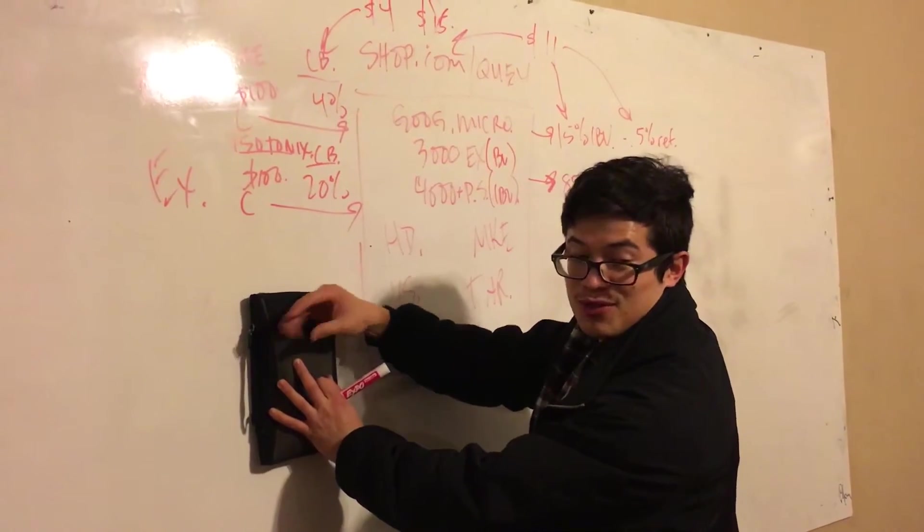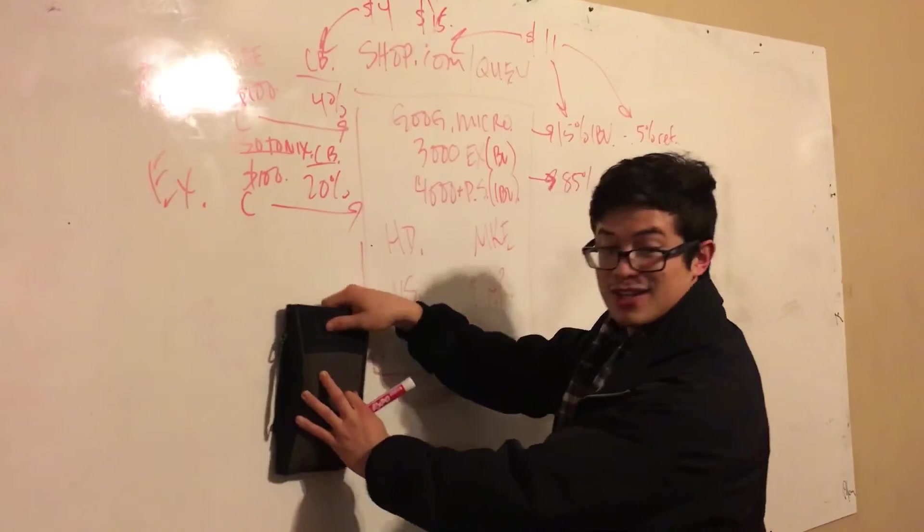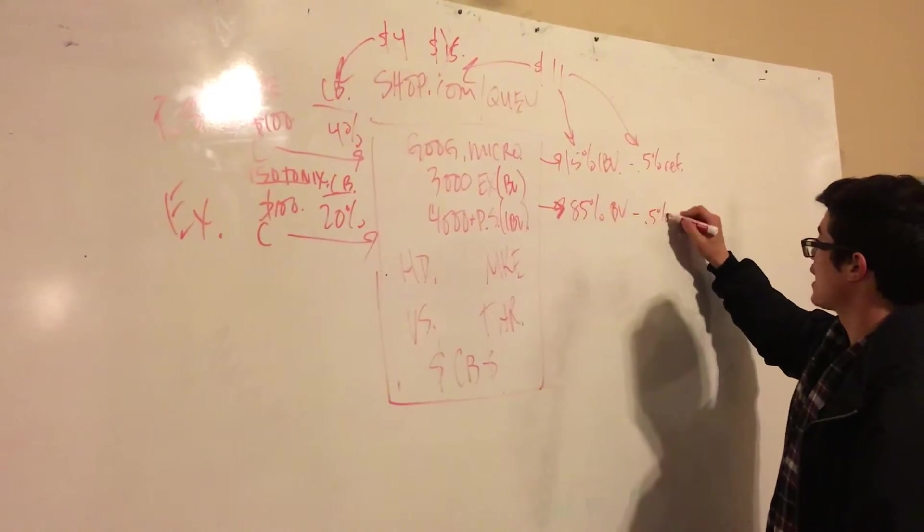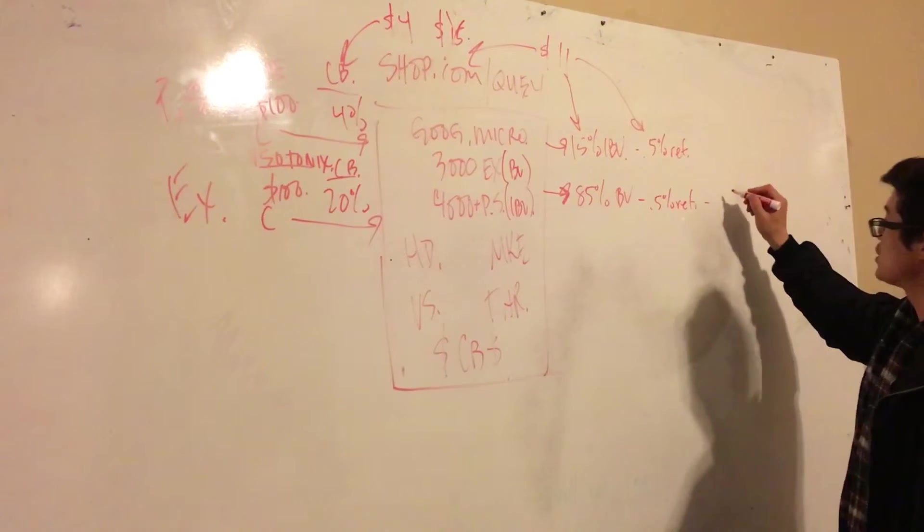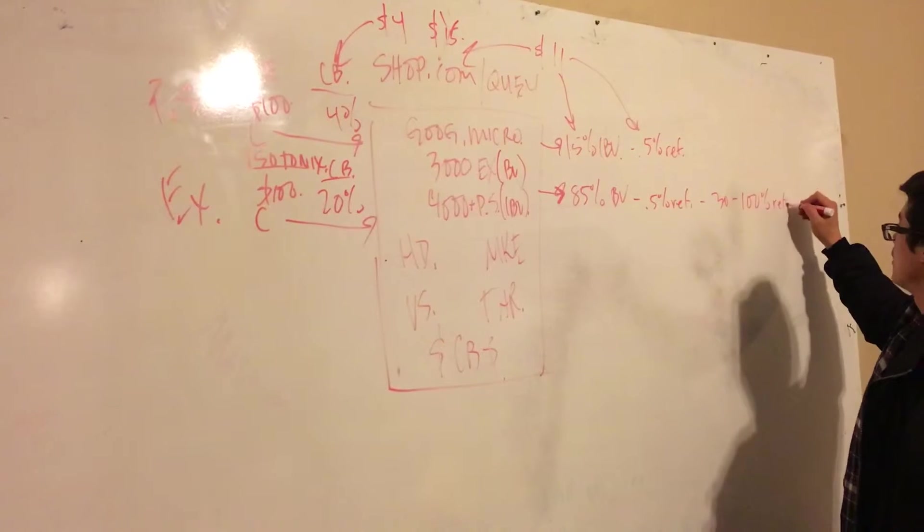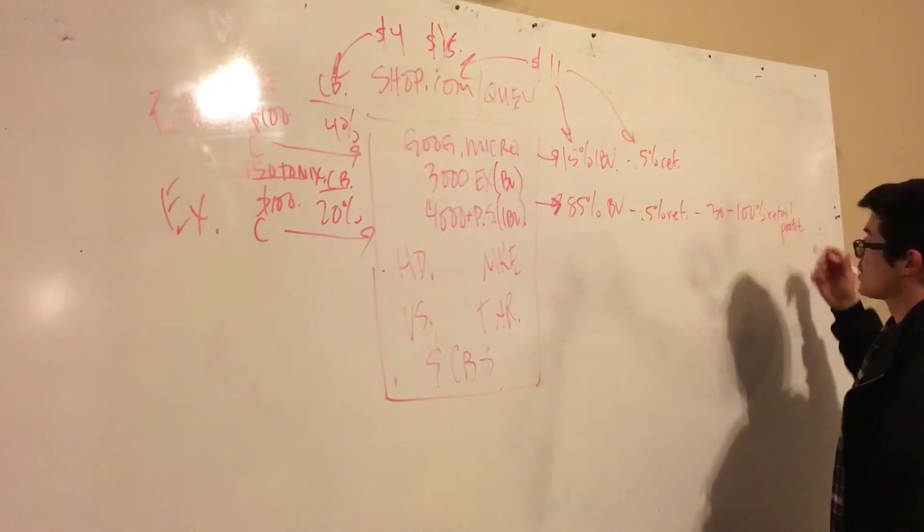Every time customers come through your business and purchase any exclusive products, BV points are generated, they go right into your BV bank. When they add up to a certain threshold you cut another commission check. It works just like IBV. You get the same 0.5 percent cashback referral, however in addition to that you're going to generate anywhere from 30 to 100 percent retail profit.